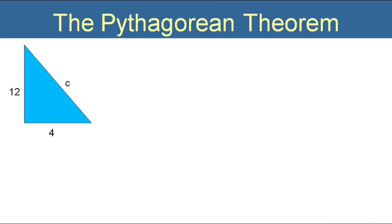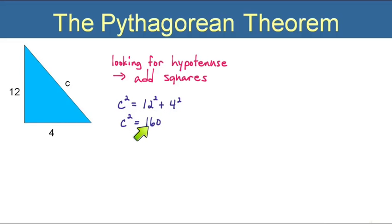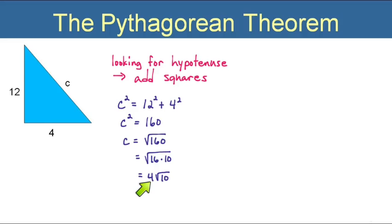All right, now here is our first example — not in the book, I just made it up. The two legs of our right triangle are 4 and 12, and we need to find the hypotenuse. Since I'm looking for the hypotenuse, I add the squares together: 12 squared plus 4 squared is 144 plus 16, which is 160. So c equals the square root of 160. Now, 160 is 16 times 10, and the square root of 16 is 4, so the 4 comes out of the radical and the 10 stays under. Our final exact answer is 4 square root of 10.